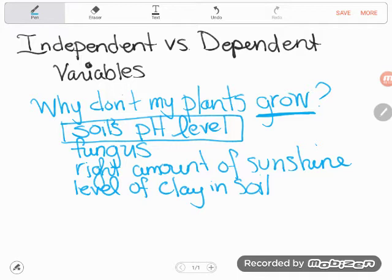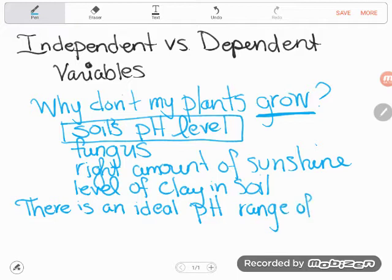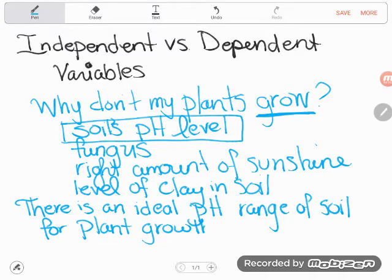And so from this I would form my hypothesis. My hypothesis is maybe there is an ideal pH range of soil for plant growth. And this isn't the only way to write a hypothesis and I'm not even trying to claim that this is the best hypothesis in the world, but all I want to show you is that there's this kind of interplay of two different variables here.